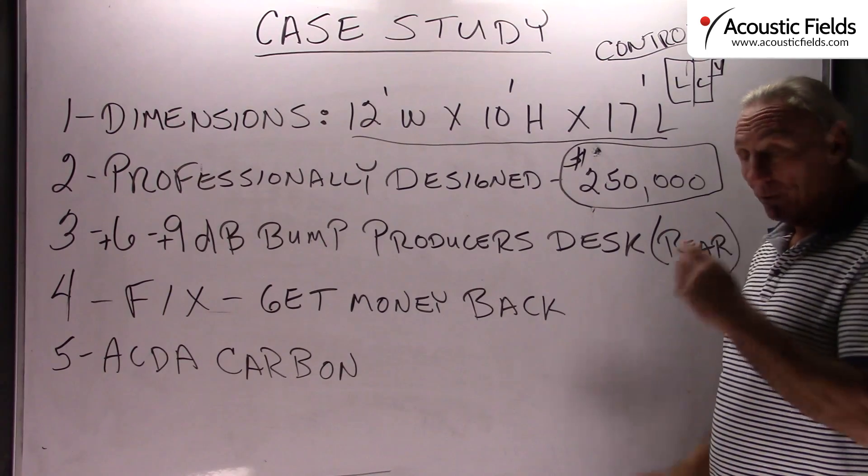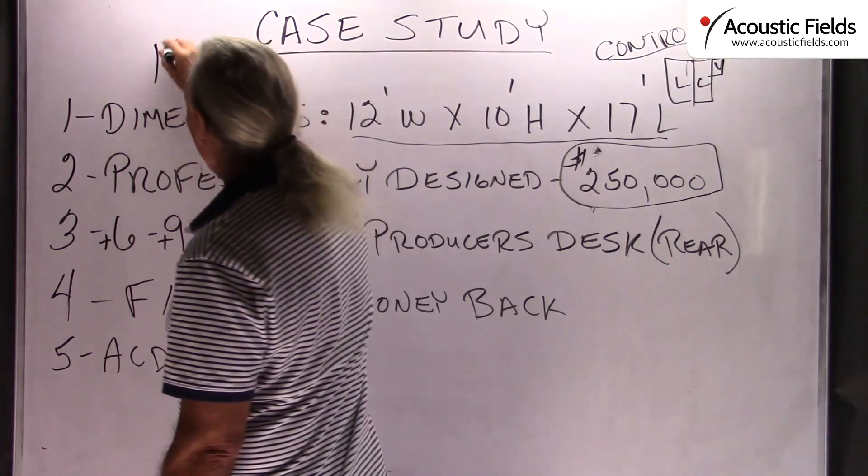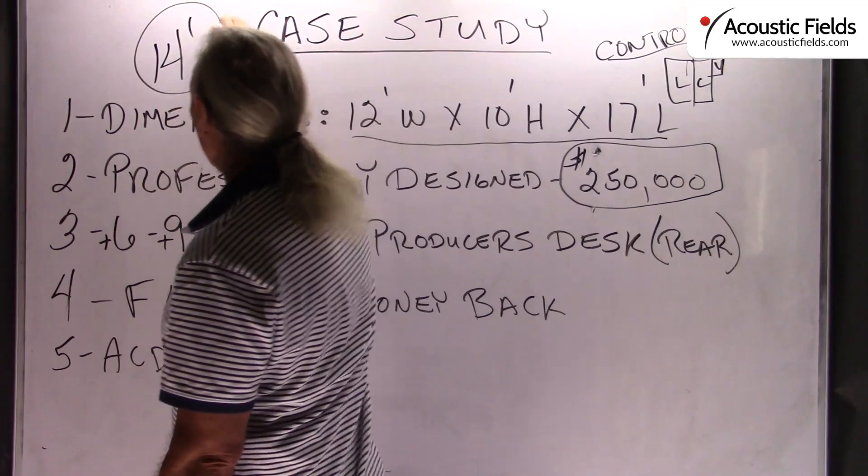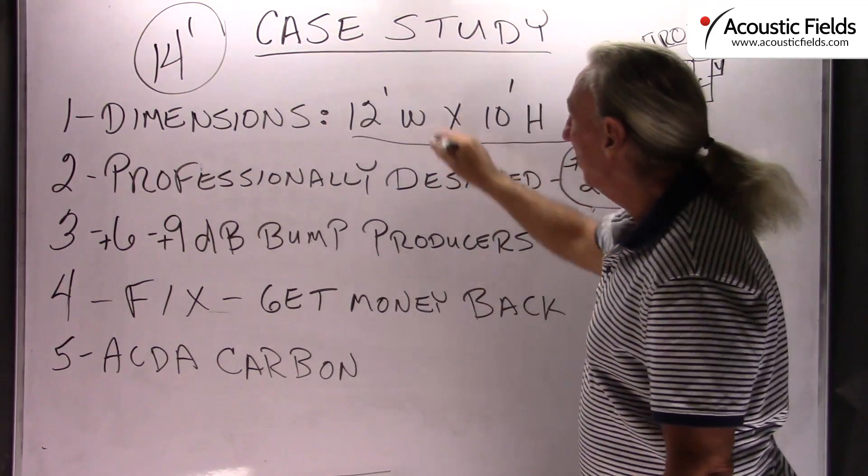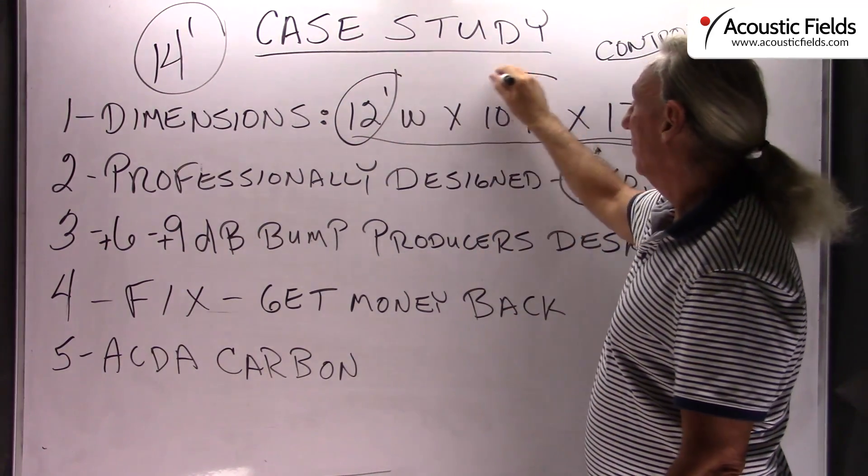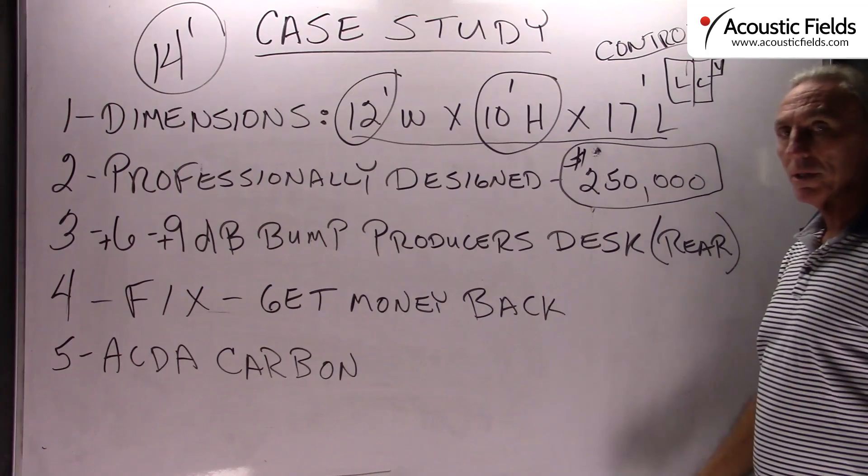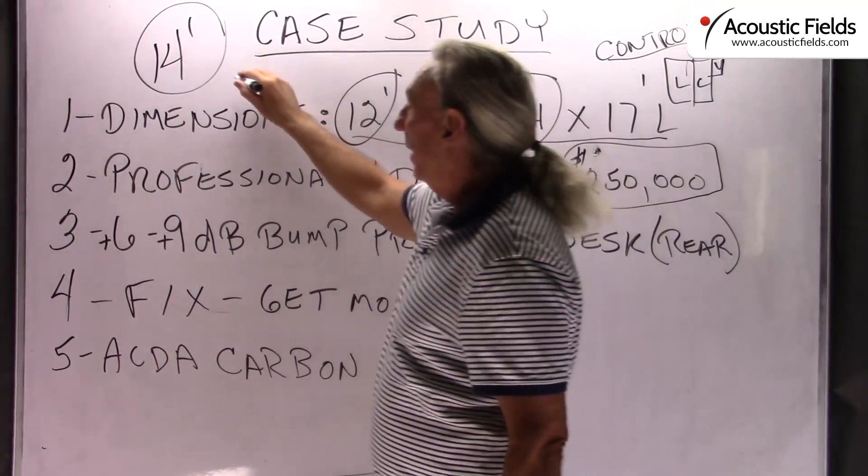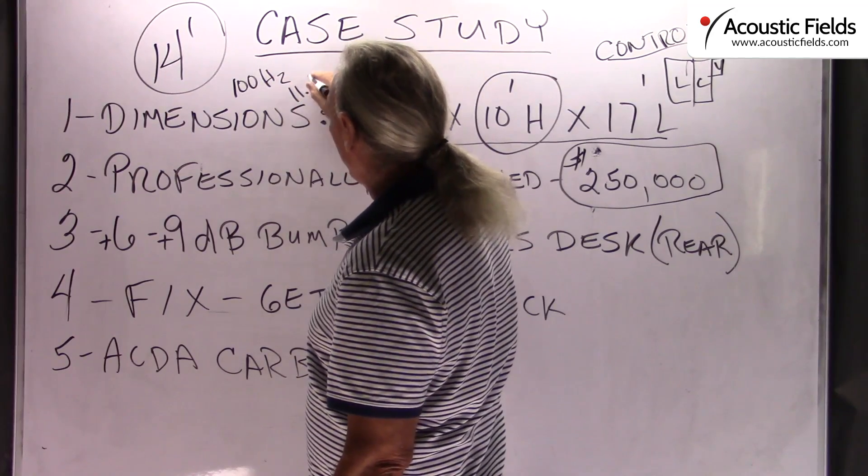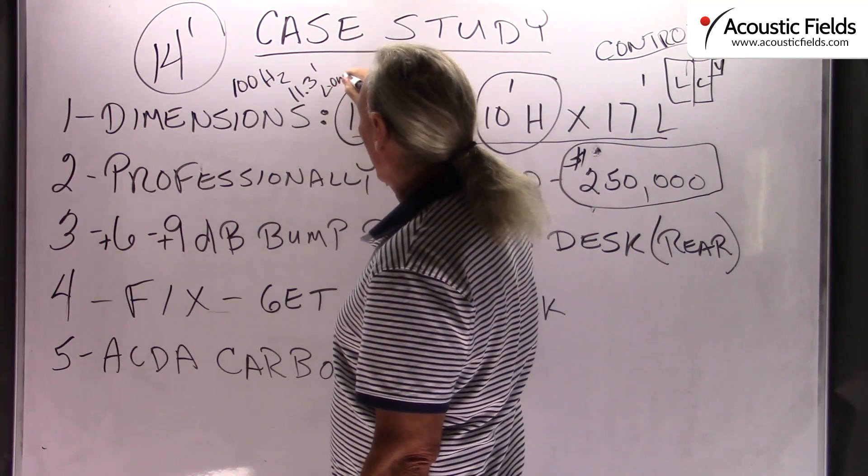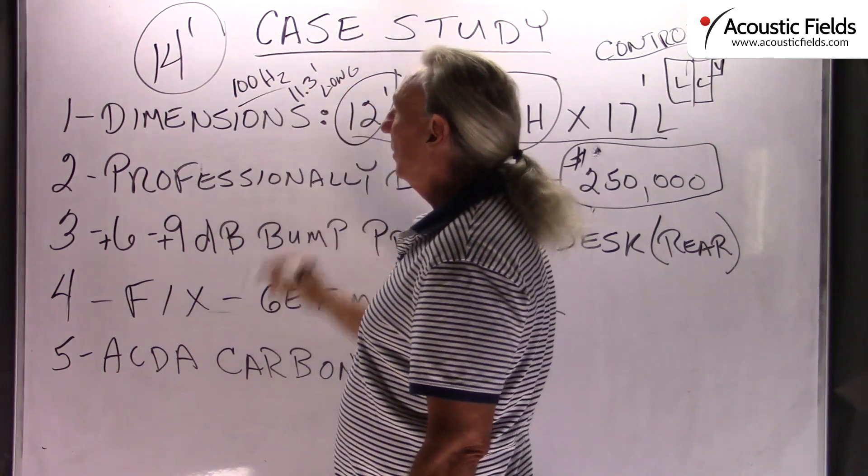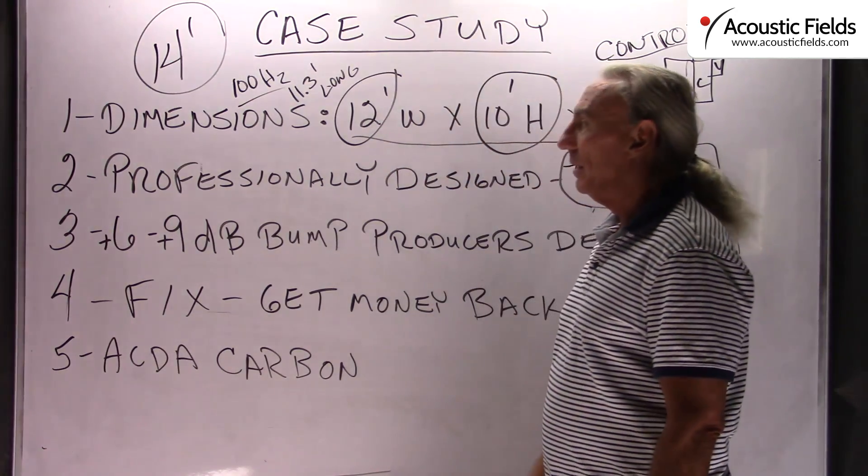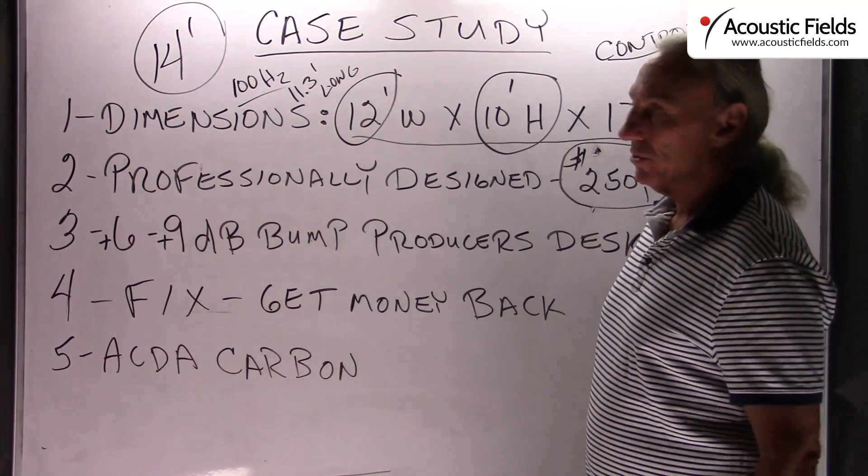Well, we all know from my videos that 14 foot is the magic number that I always tell people. Any dimension less than 14 foot in acoustics is always problematical because we know at 100 cycles that's 11.3 foot long. So we want to make sure that a 100 cycle wave will fit and we want to go a little bit extra just to make sure.